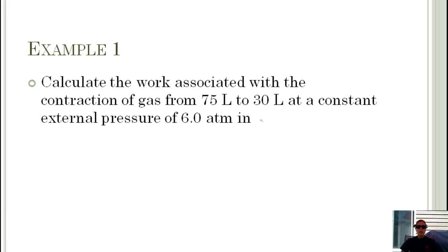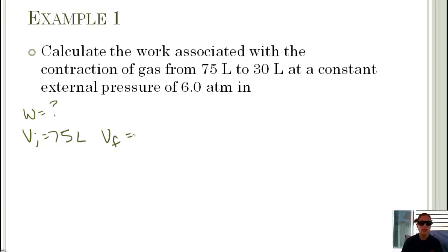Let's take a look at an example. We're going to calculate the work associated with the contraction of a gas. We know our initial volume is 75 liters and our final volume is 30 liters, so it's getting smaller, at a constant external pressure of 6 atmospheres. If the system does work, it's pushing out, expanding the volume. Here the volume is being contracted, so that means the surroundings is doing work on the system. We should get a positive value for work.